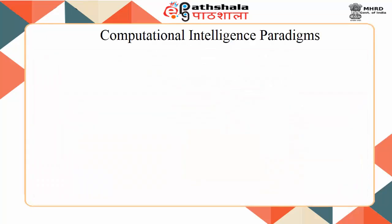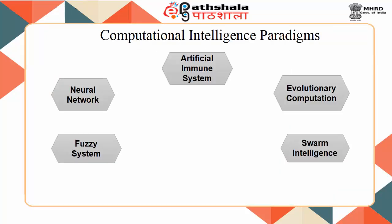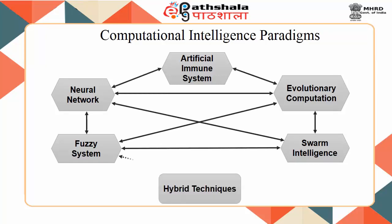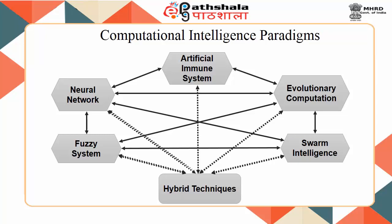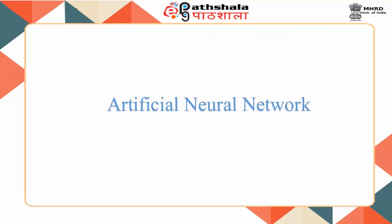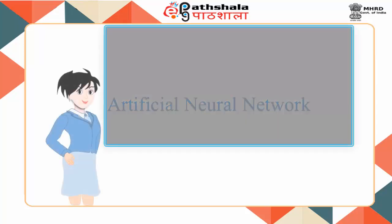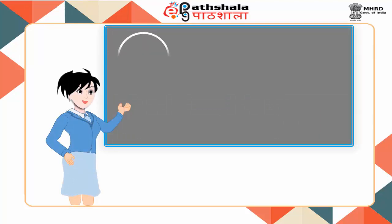Here we will look into computational intelligence paradigms. Under the umbrella of computational intelligence, the paradigms are artificial neural networks, evolutionary computation, swarm intelligence, artificial immune system, and fuzzy system.